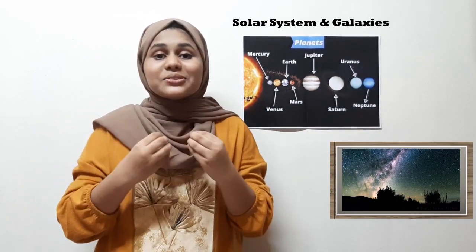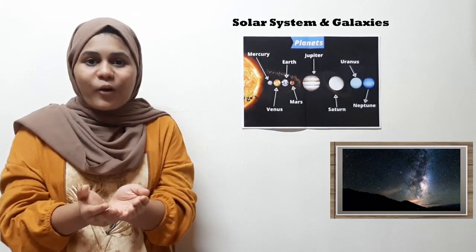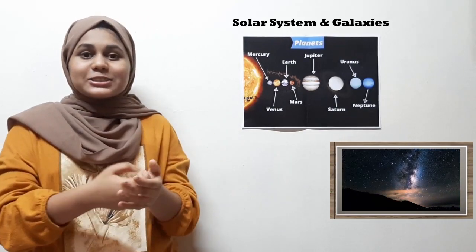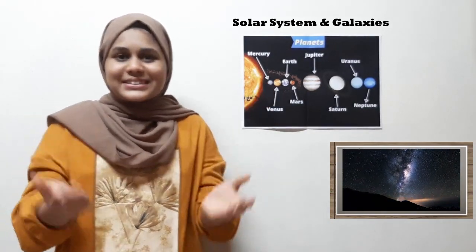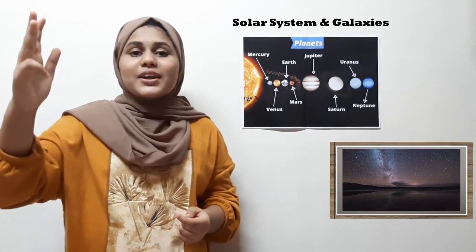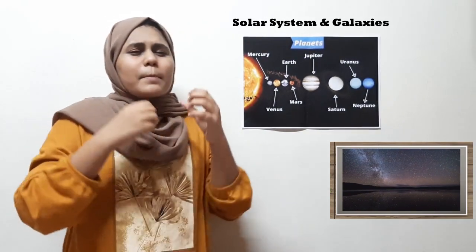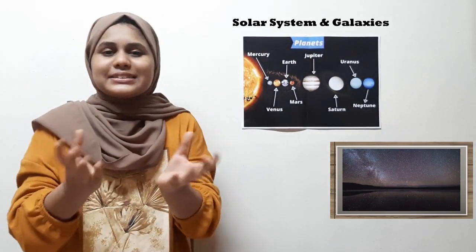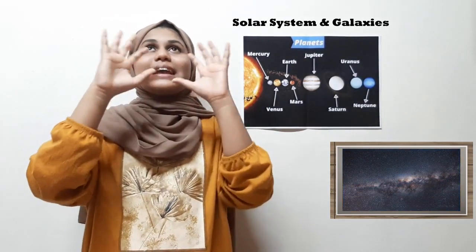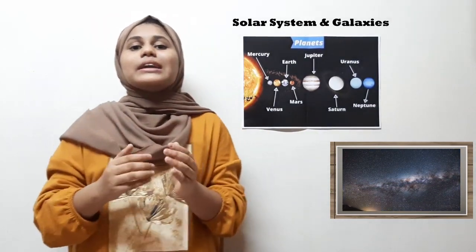Our solar system is in a galaxy. A galaxy is a cluster of stars — we have stars, planets, dust, and gas. A galaxy has billions and trillions of stars, and that is what makes a galaxy so beautiful.